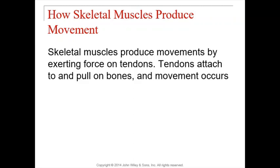There is connective tissue that attaches muscle to bone. That connective tissue structure that attaches muscle to bone is a tendon. Make sure you know what a tendon does — a tendon attaches muscle to bone. You know your skeletal muscles contract and shorten. When they shorten, they're going to pull on the tendon, and that tendon will pull on the bone, and you would see that as a movement. So that's how you're moving.